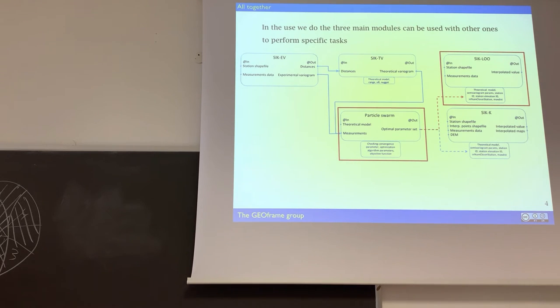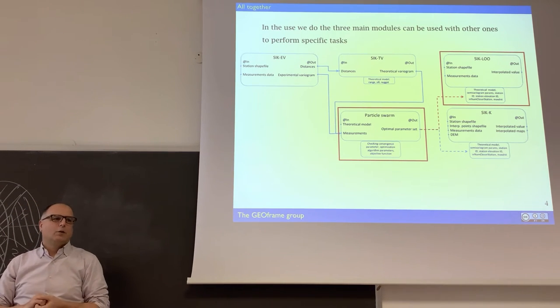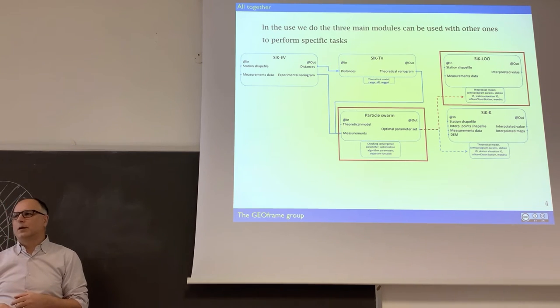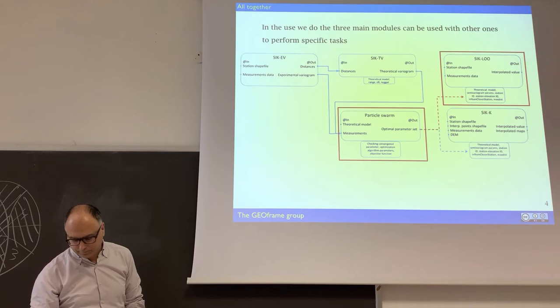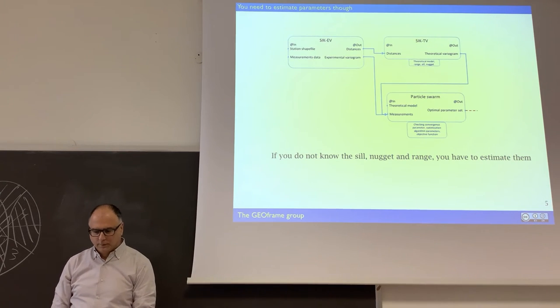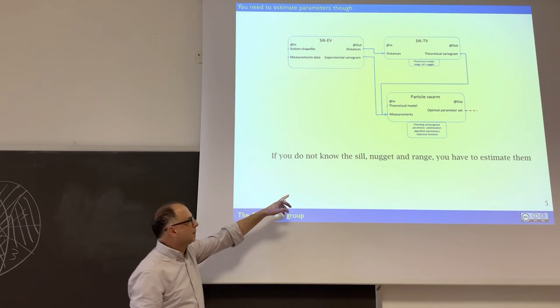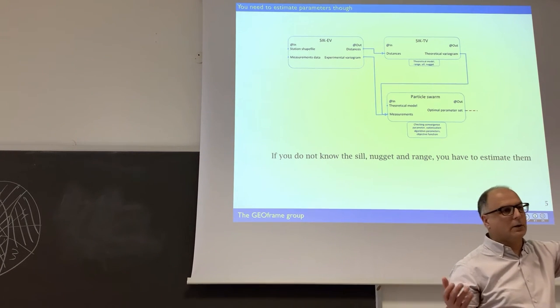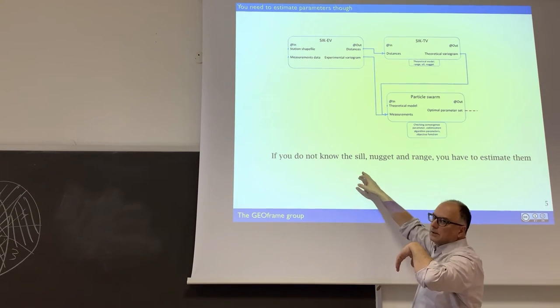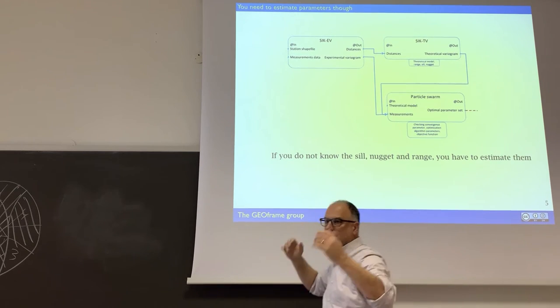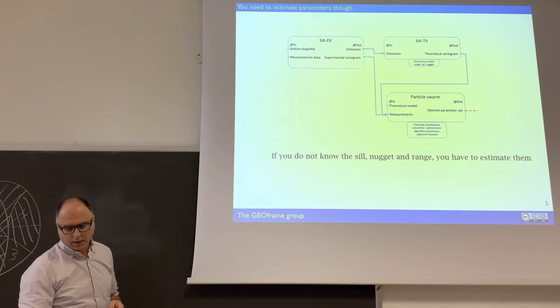We have the particle swarm as a calibrator, where we try several solutions, and then there is an algorithm for convergence of this one. Maybe Giuseppe will explain how we, I don't think today, but maybe in the next day. So what does the particle swarm do? The particle swarm is used for, actually, given the form of the theoretical semi-variogram, to estimate the sill, the nugget, the range, the expansion of the parameters that appear in our theoretical semi-variogram.